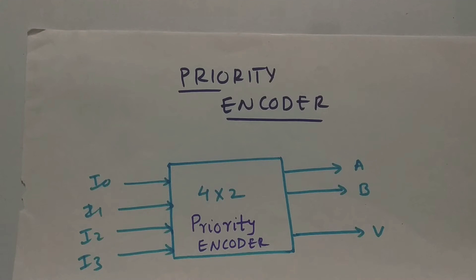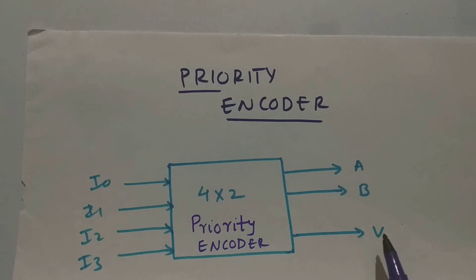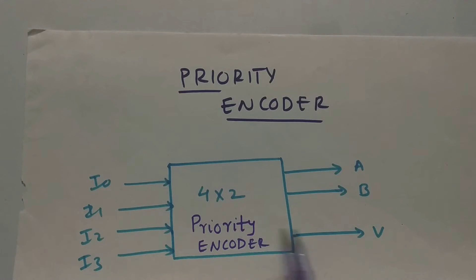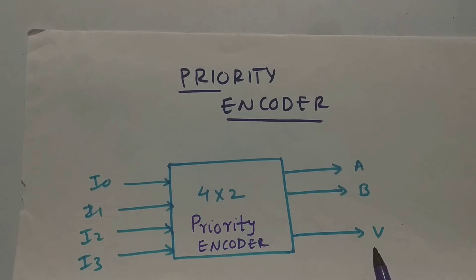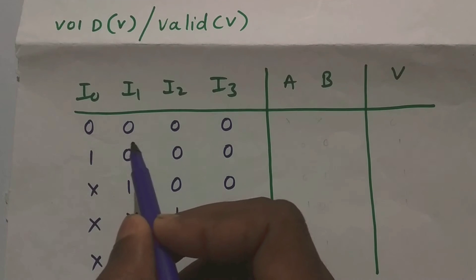The priority encoder is simple — be patient till the end. As you can see, this is the block diagram of a priority encoder where we have four inputs, two outputs, and an extra bit V. This V bit can be a valid or void bit, and it indicates that our inputs are not zero — if one of the inputs is high, this bit will be valid.